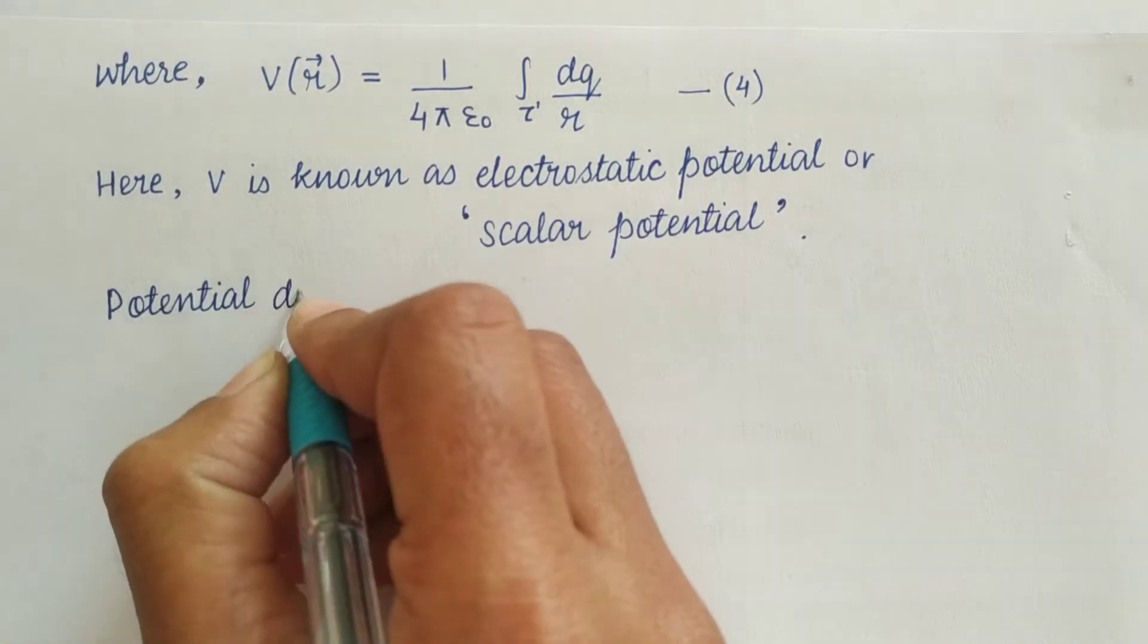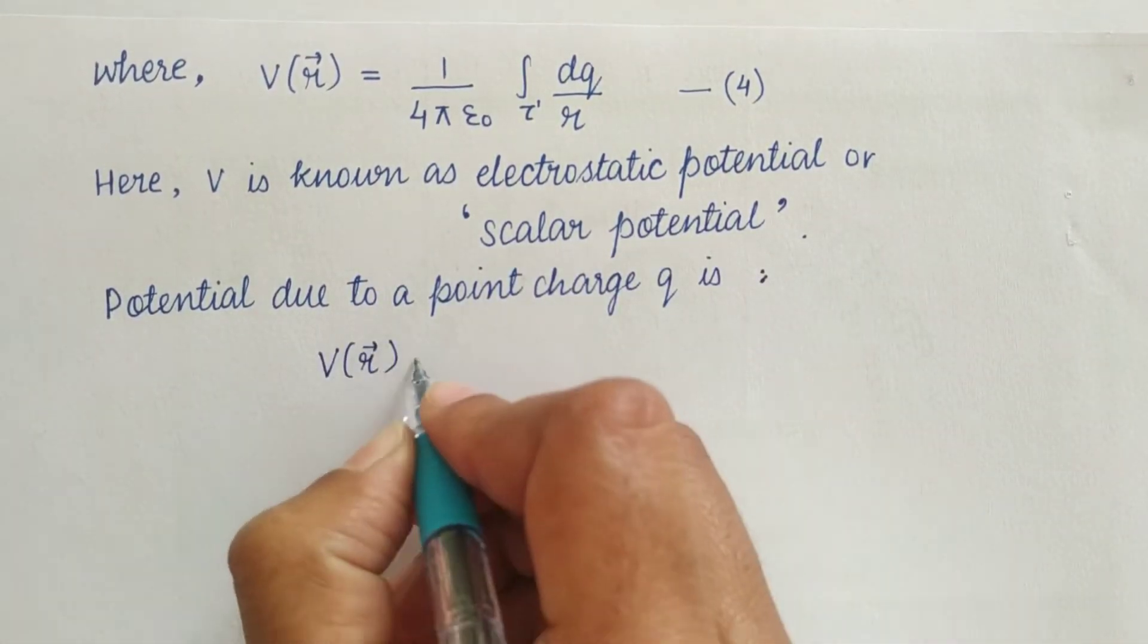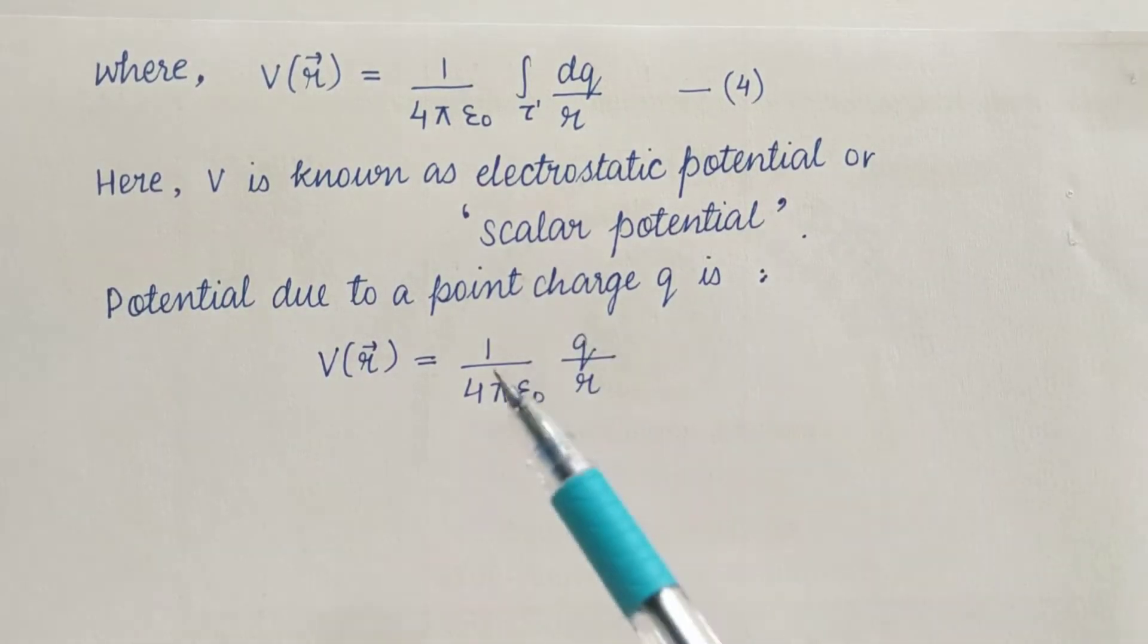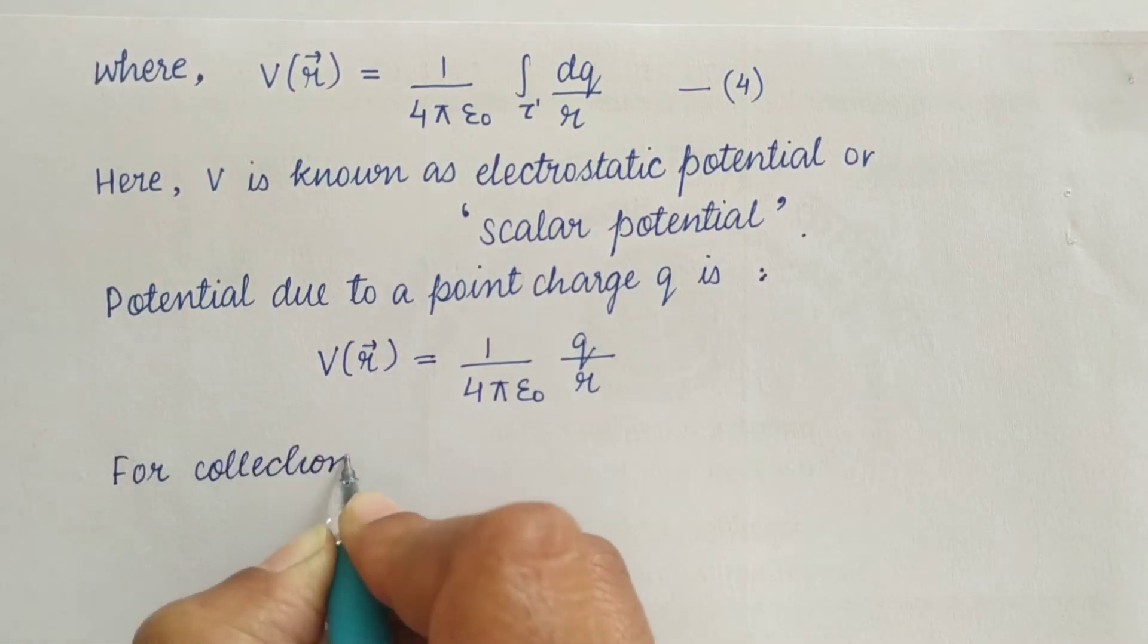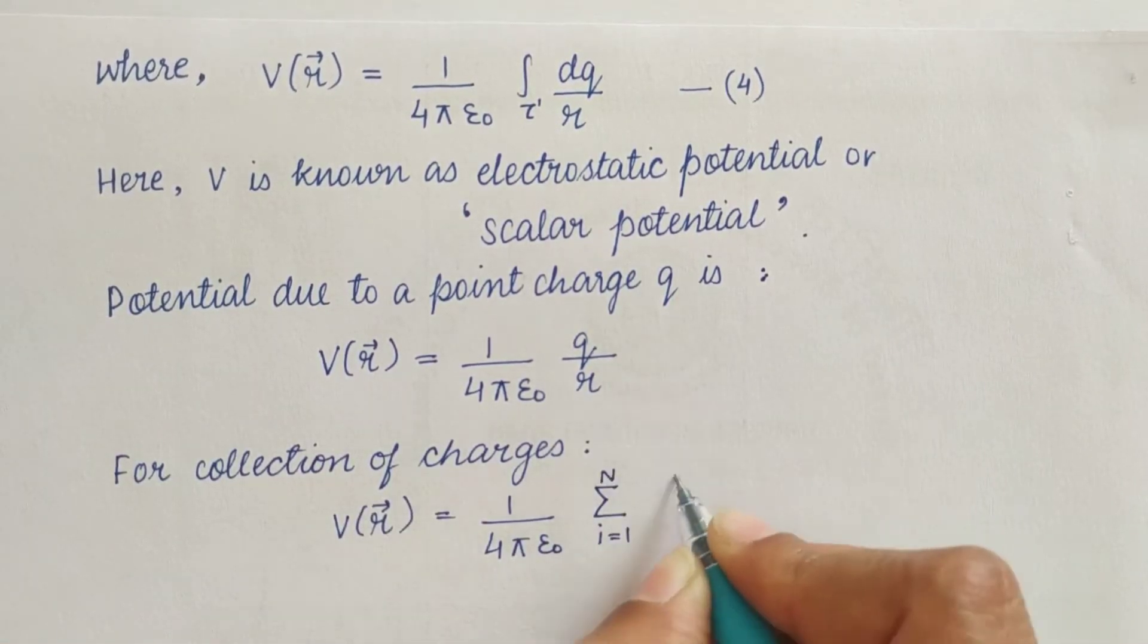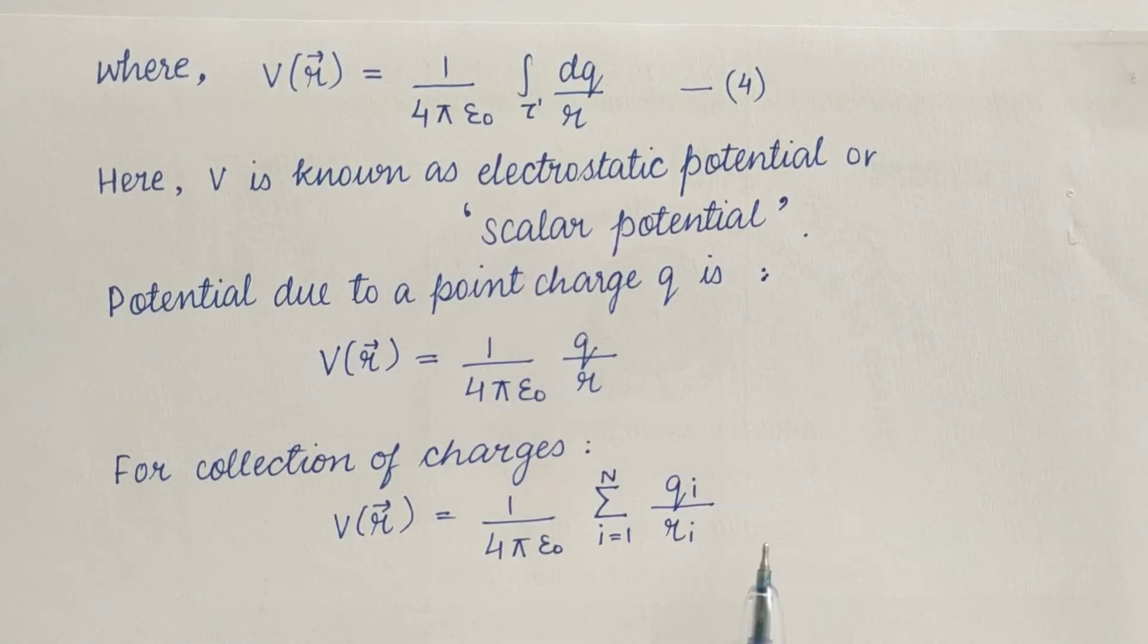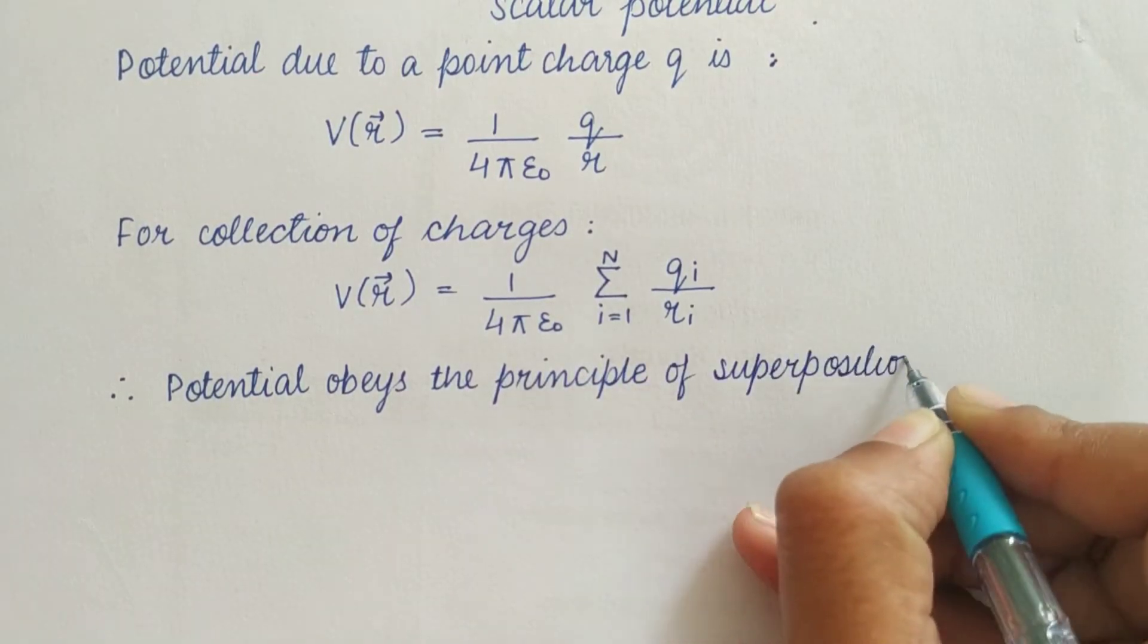Now integrating, we will get the potential due to the point charge q. After integration we get 1 upon 4 pi epsilon 0 q by R. For collection of charges we write potential in summation form where i is from 1 to n. Therefore potential obeys the principle of superposition.